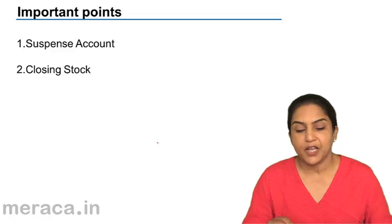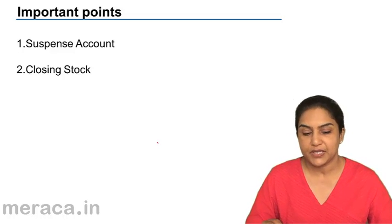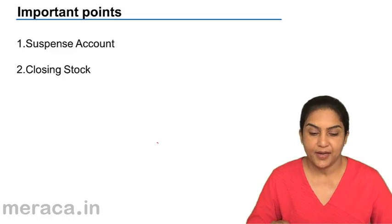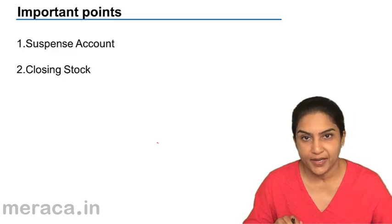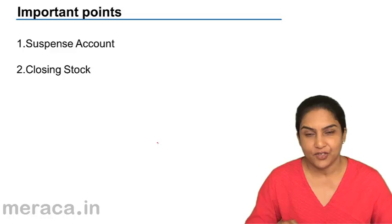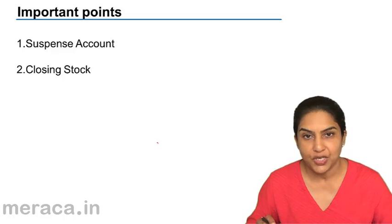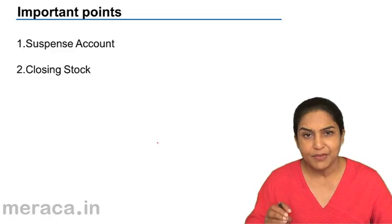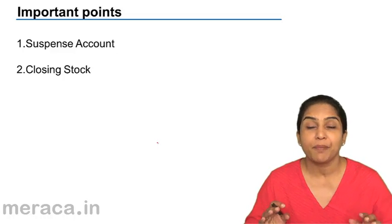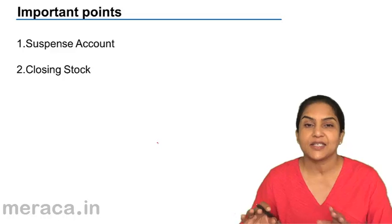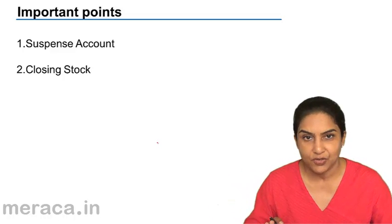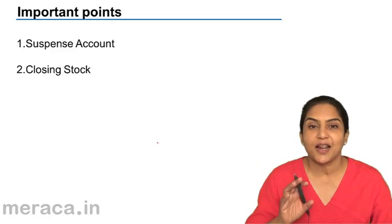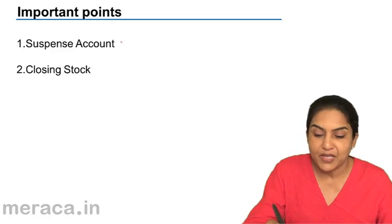Let us come to something called a suspense account. What is a suspense account? A trial balance is supposed to agree. If the debit side and the credit side do not agree, we try and locate the errors. We go back to the books of account, look at the posting, look at the totalling and try to locate the errors. But sometimes it may be difficult to find the error, there may not be enough time, and it becomes necessary to move on and prepare our final accounts. In that case, the difference in the trial balance is put in what is called a suspense account.